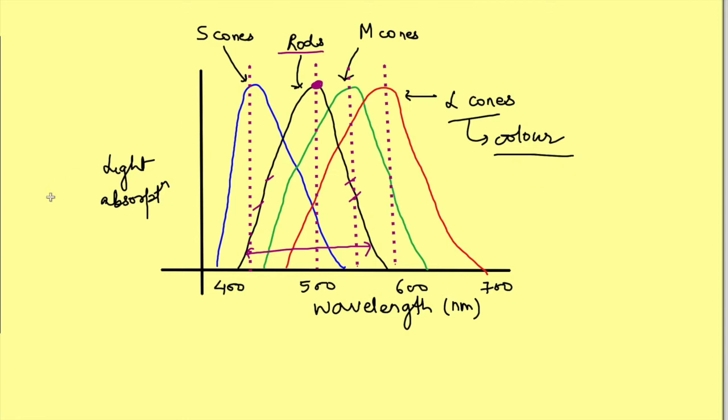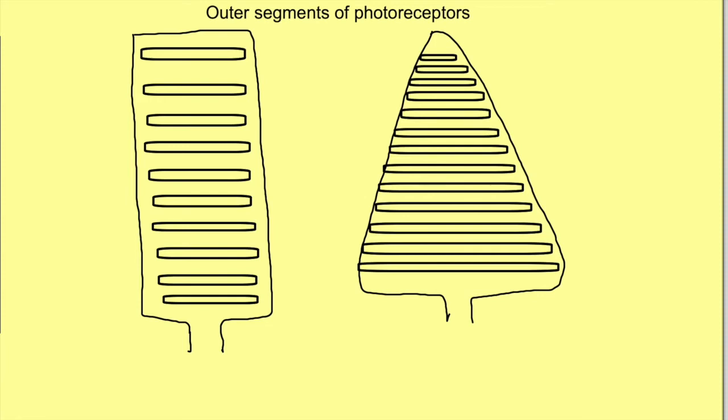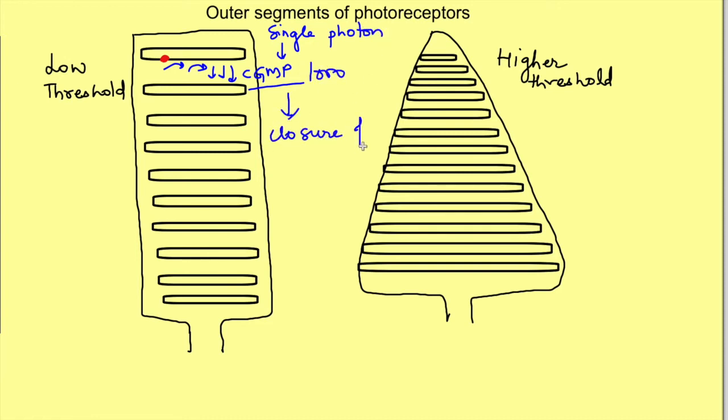Secondly, rods and cones work maximally under different conditions of illumination. Rods have a low threshold to light, i.e. they are very sensitive, while cones have a higher threshold. This happens because in rods there is so much amplification of the signal that excitation by a single photon can cause degradation of as many as 1000 cGMP molecules causing closure of approximately 200 sodium channels and hence hyperpolarization of the receptors.